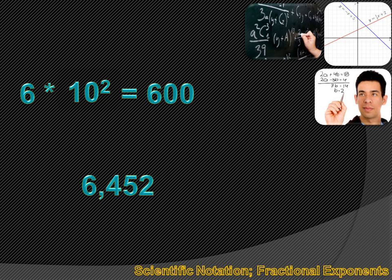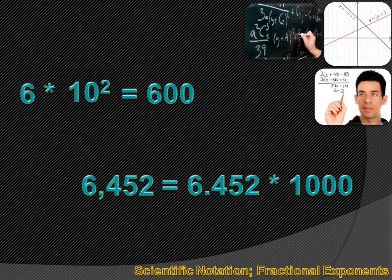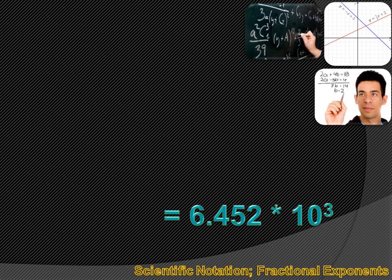Let's say I had a bigger number, 6,452, and I wanted to move my decimal point three to the left — so it's between the 6 and the 4 — but keep the value the same. I'd move the decimal three places to the left and multiply by 1,000 to indicate the decimal moved three places back to the right. So it's accurate to say 6.452 times 10 to the third equals 6,452. That's the basic form of scientific notation: a single-digit number with a decimal, times 10 to some power.